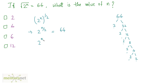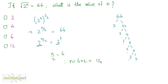So on the left hand side I have 2 raised to n by 2, and on the right hand side I have 2 raised to power 6. Since the bases are the same, I can write n by 2 is equal to 6, therefore n is equal to 6 times 2, which is 12.